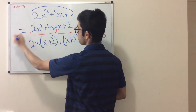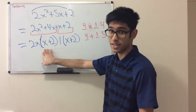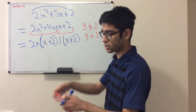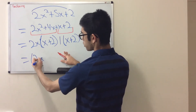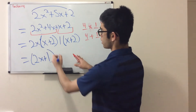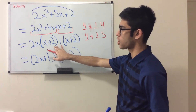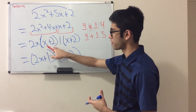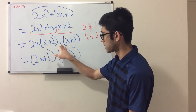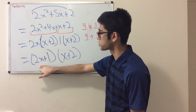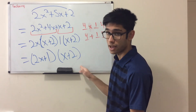For the group x plus 2, there's no common factor other than 1, so I write 1(x plus 2). Now I see the binomial x plus 2 appears twice — that means I've done the process correctly. I collect the outside terms, 2x and 1, into a binomial: (2x plus 1), and write x plus 2 once. The factored form is (2x plus 1)(x plus 2).